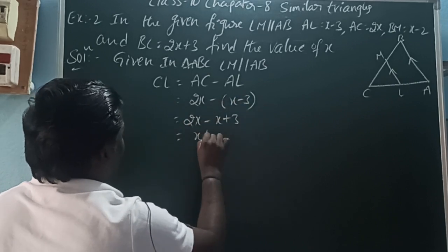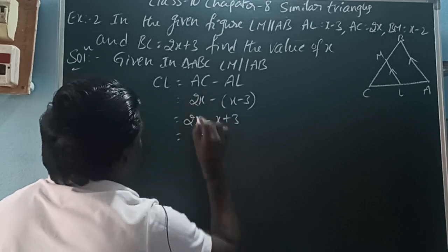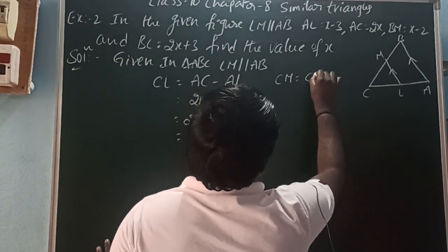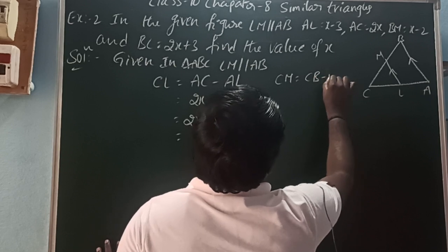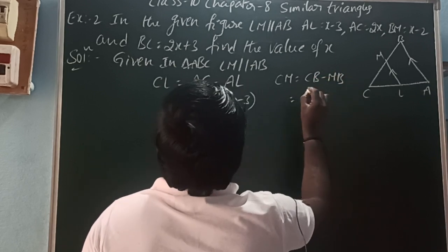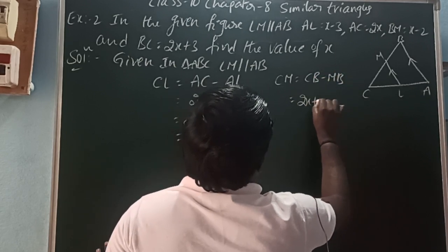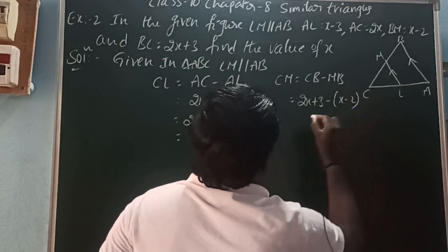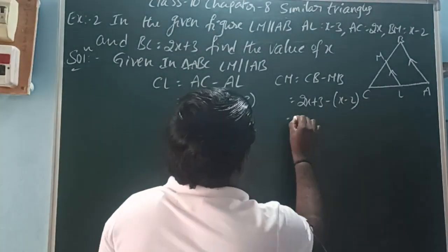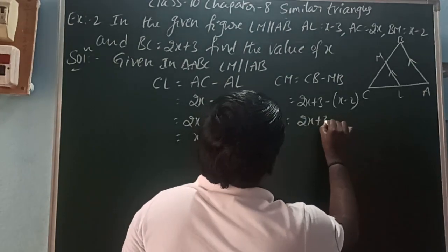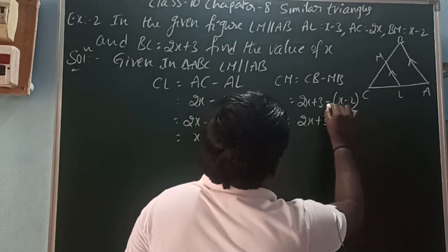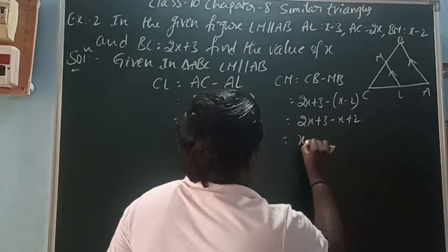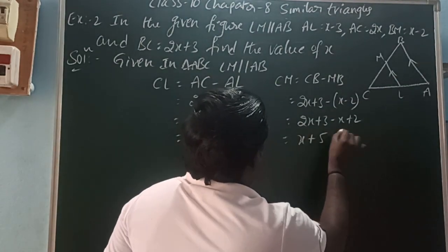CL equals AC minus AL. That is 2x minus (x minus 3), which gives x plus 3. CM equals CB minus MB. CB is 2x plus 3, minus MB which is x minus 2. So 2x minus x gives x, and 3 plus 2 gives 5. Therefore CM equals x plus 5.